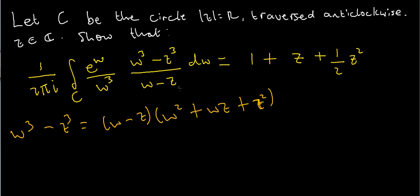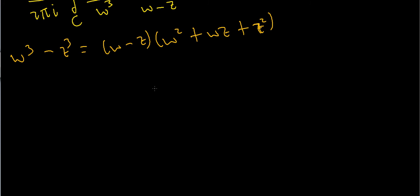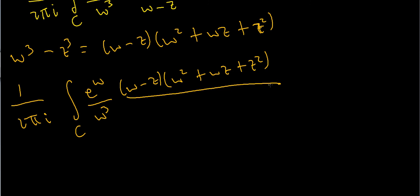Now I'm just going to substitute this into my integral. I'll end up getting 1 over 2 pi i times the integral over my contour C of e to the w over w cubed. If I substitute this into the denominator, I'm just going to get w minus z times w squared plus wz plus z squared all divided by w minus z. And you'll immediately see that the w minus z's cancel.